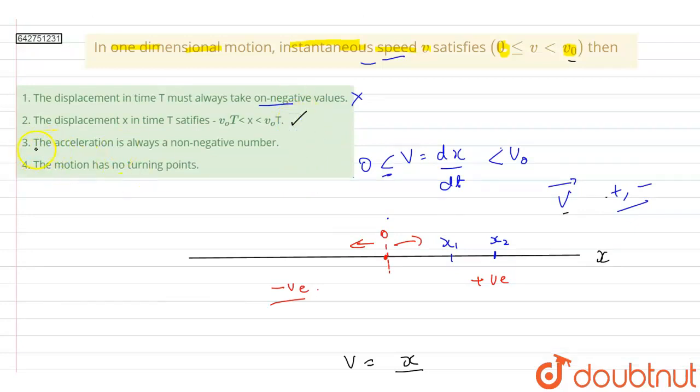Now let us look at option three: the acceleration is always non-negative number. Now acceleration is also a vector and here again acceleration can be negative depending upon the direction and it can be positive. So therefore option three is incorrect.